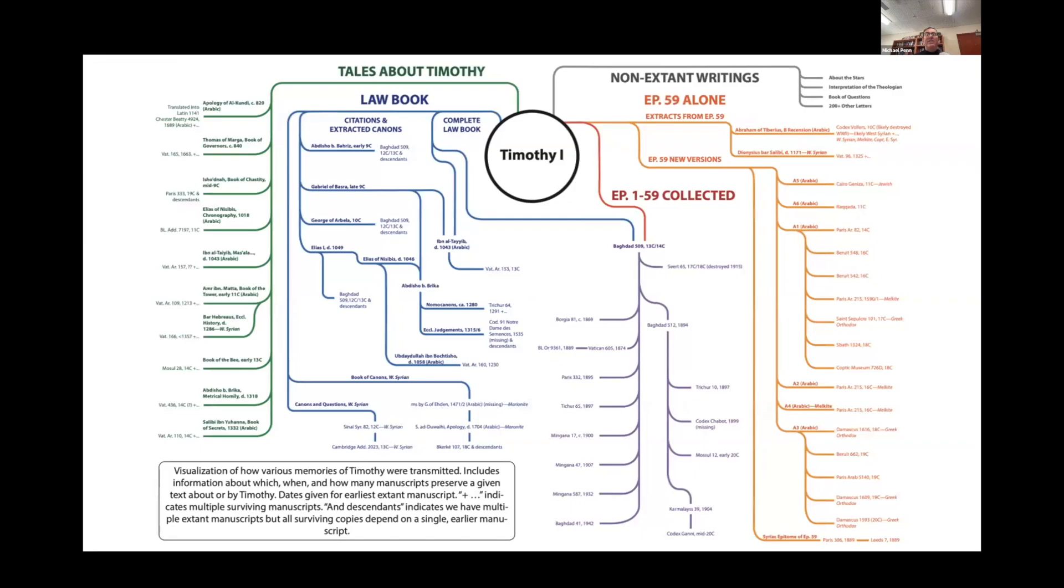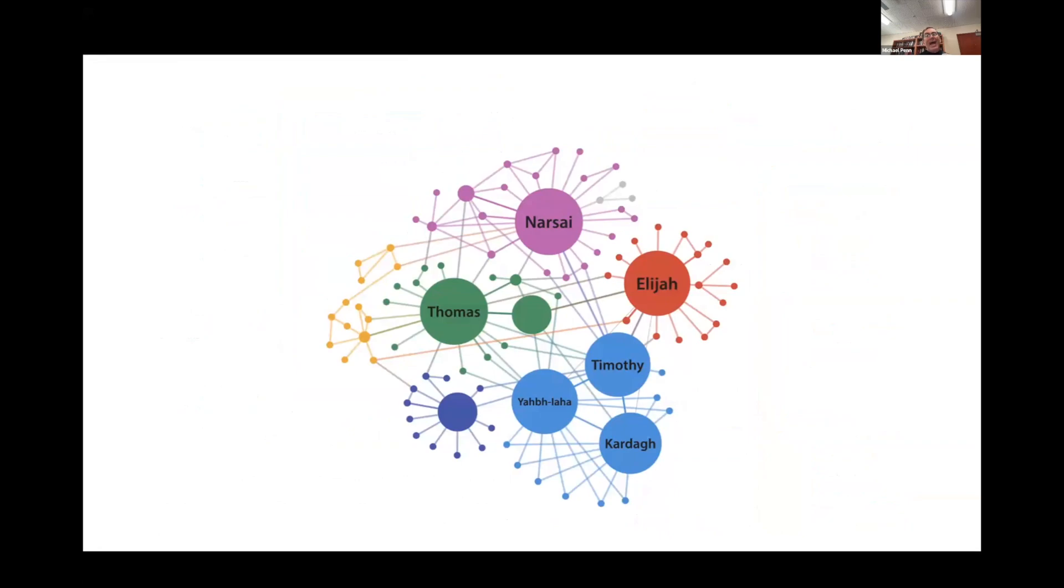Alternatively, I'm also interested in memories of Timothy, and one can graph out both later authors that speak about Timothy, about authors who include excerpts of Timothy's texts, as well as manuscripts that preserve the texts themselves. One can also drill down, looking at how a specific author, in this case Thomas of Marga, who preserves our earliest extensive account of Timothy, how Timothy functions within that literary account and its character networks.